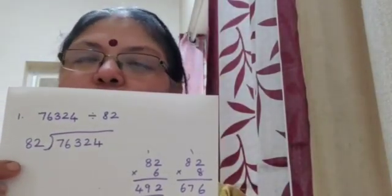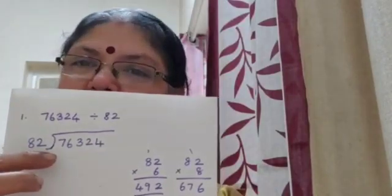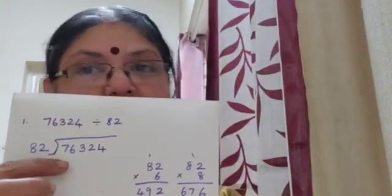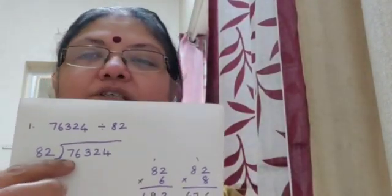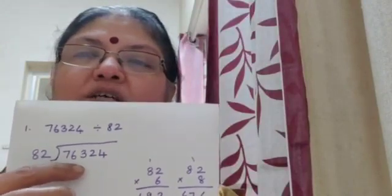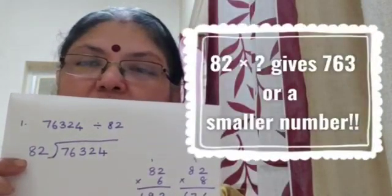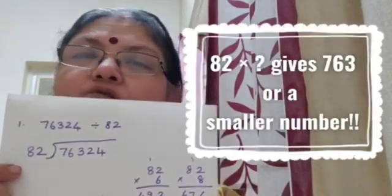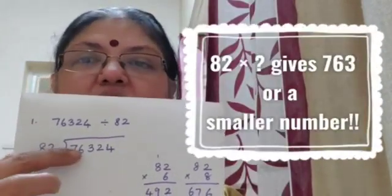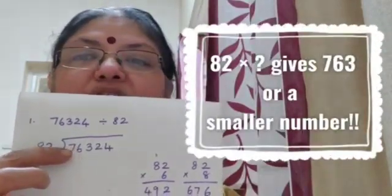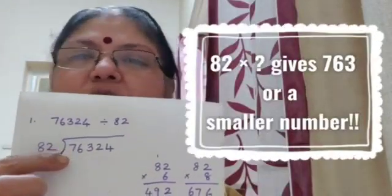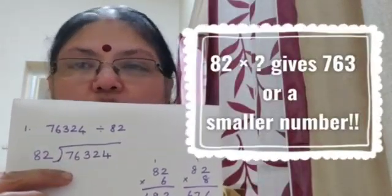So when you do that, what you do is take the first two digits. Oh, it is smaller, okay, I need to take the first three digits. So when I take the first three digits, this number which is 82 here, it goes how many times so that I'm able to get a number which is the same or close to it which is smaller than it.